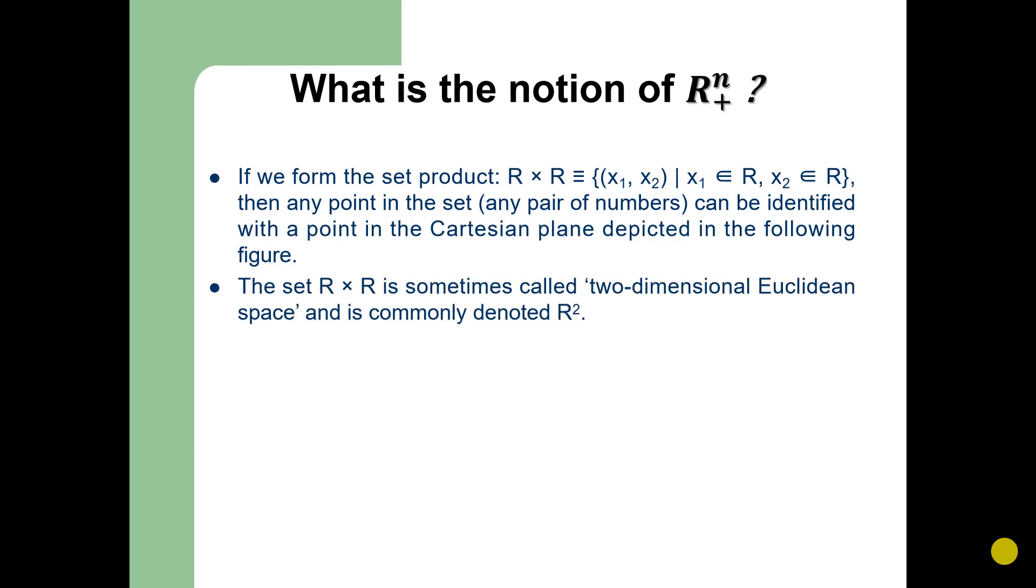The set R × R is sometimes known as two-dimensional Euclidean space and is commonly denoted by R². Below this is the example of a Cartesian plane in which the horizontal line ranges between minus infinity and plus infinity, and the vertical straight line also ranges from negative infinity up to positive infinity. This is the Cartesian product, a two-dimensional space.